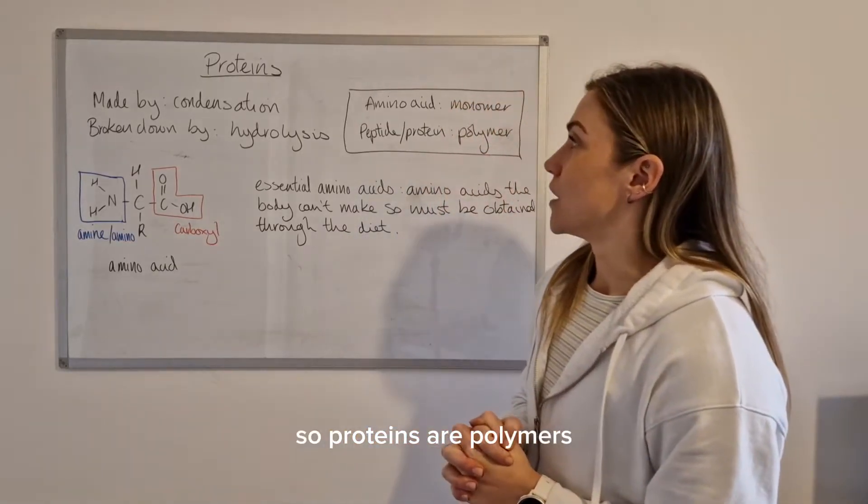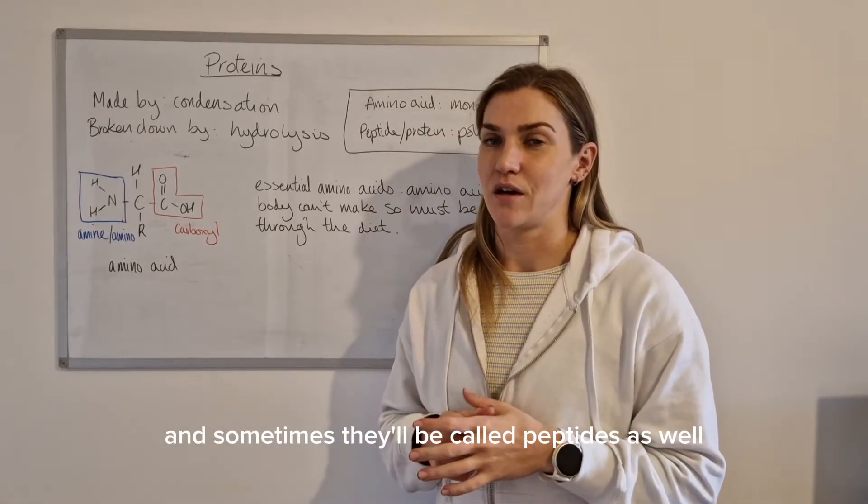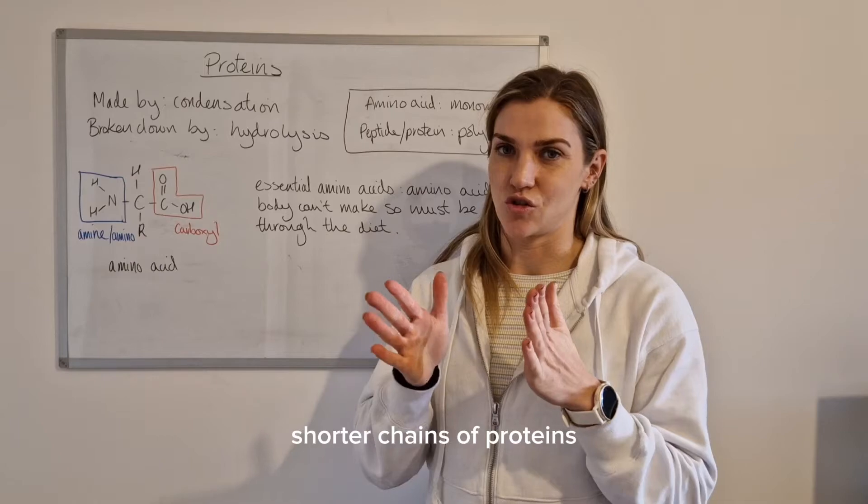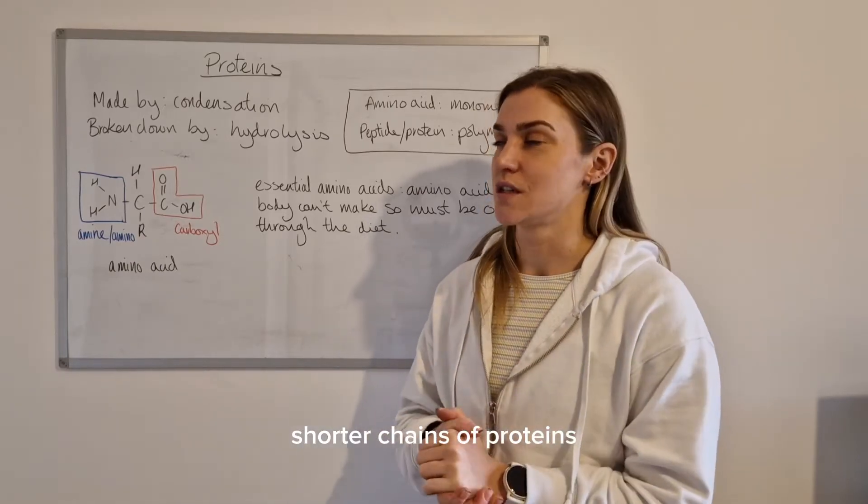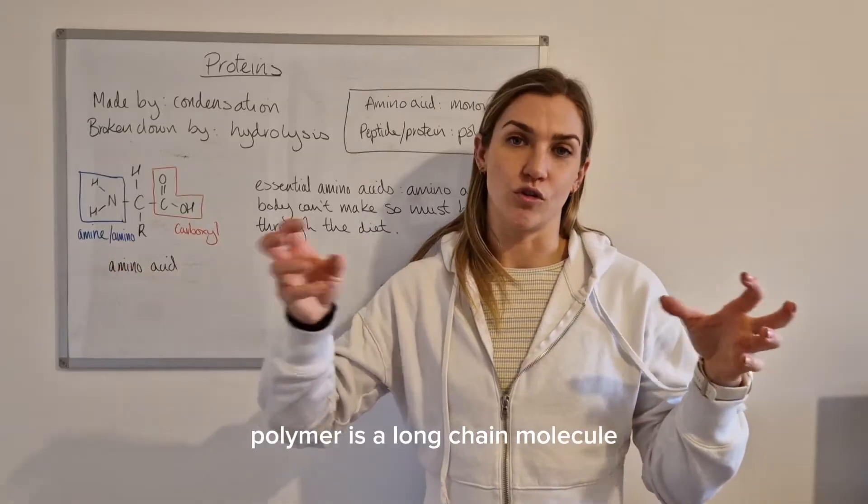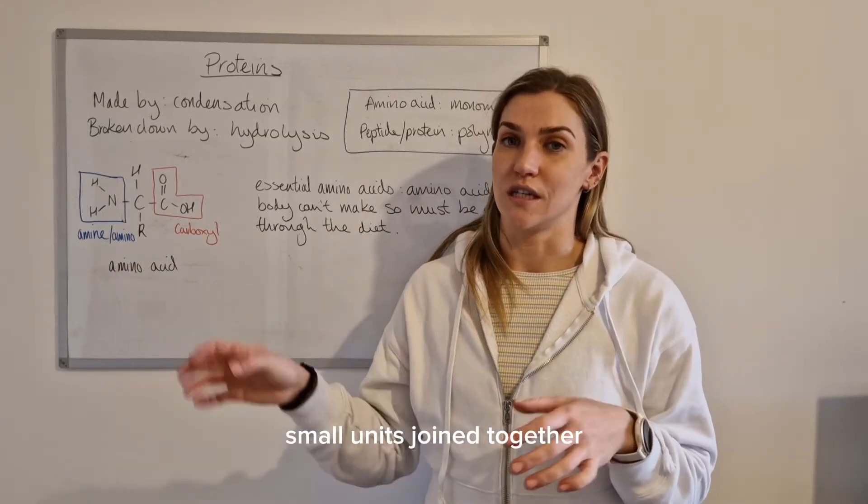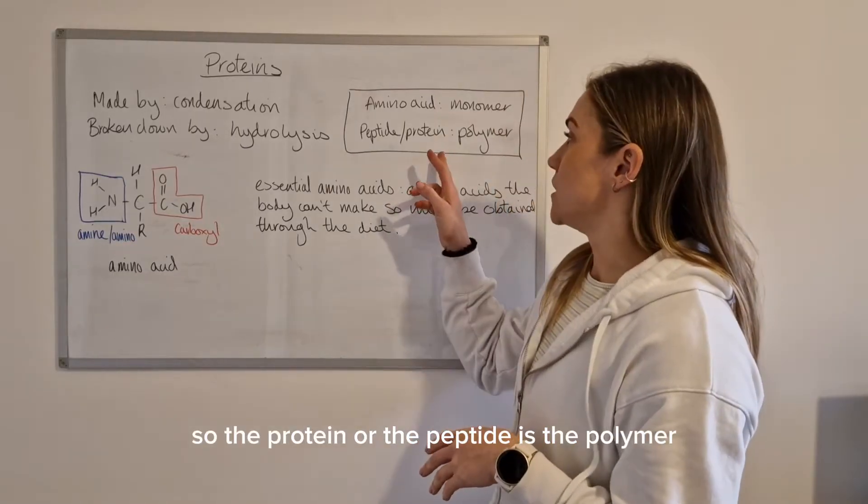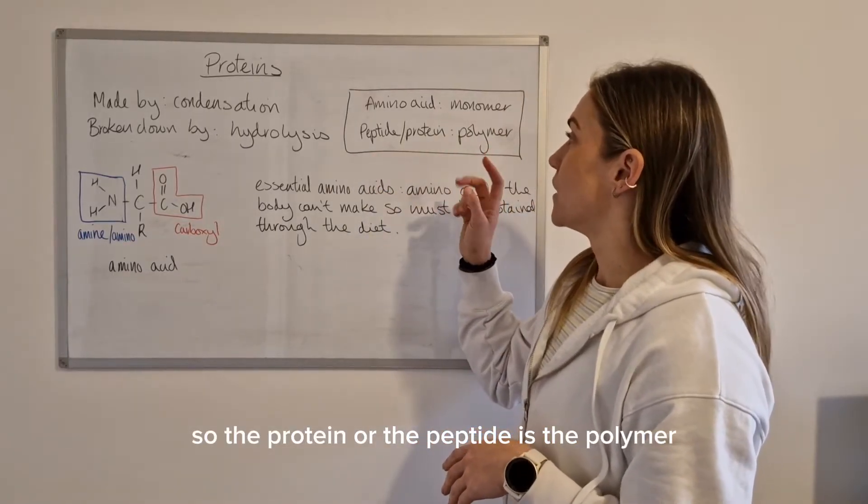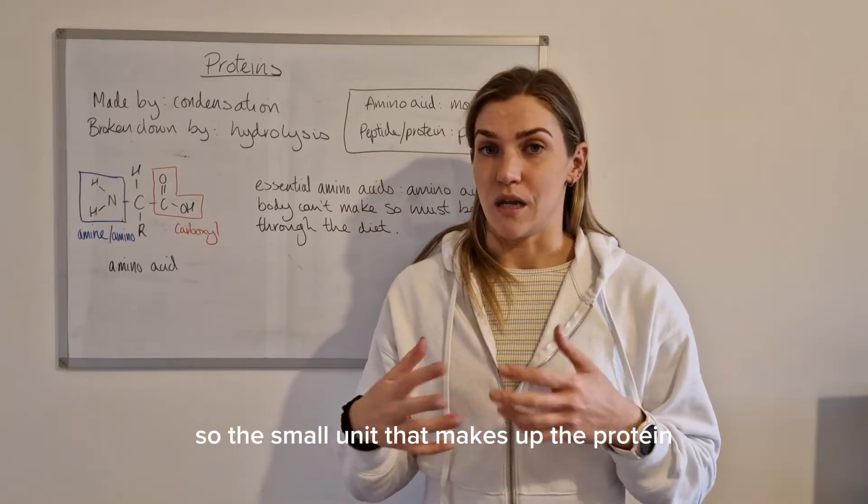So proteins are polymers and sometimes they'll be called peptides as well, and peptides are just shorter chains of proteins. Hopefully you'll remember from National Five a polymer is a long chain molecule where it's made up of lots of small units joined together. So the protein or the peptide is the polymer, the amino acid is then the monomer so the small unit that makes up the protein.